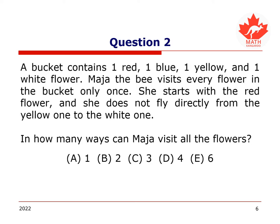In the second question, we are asked to consider a bucket containing one red, one blue, one yellow, and one white flower. Maya the bee visits every flower in the bucket only once. She starts with the red flower, and she does not fly directly from the yellow one to the white one.